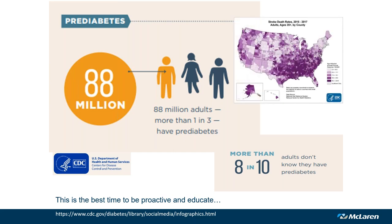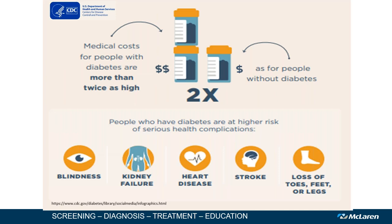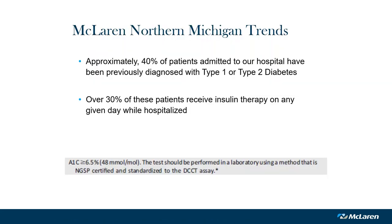A CDC map showing how dark purple our northern Michigan region is really drives our stroke collaborative in the relentless pursuit of excellence. Patients with diabetes have comorbidities including stroke and coronary artery disease. Researchers have found that patients with diabetes have an annual average of $17,000 in medical expenditures, approximately half attributed to diabetes—two times higher than the cost for a patient without diabetes. Approximately 40% of our patients admitted to our hospital have been previously diagnosed with type 1 or type 2 diabetes, and approximately 30% or more receive insulin therapy on any given day while hospitalized.